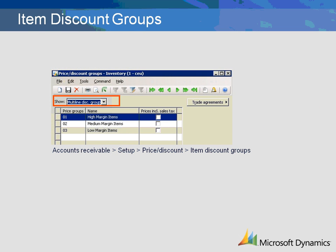The item discount group form can be accessed either through Accounts Receivable or Inventory. The same form is accessed, so if you create groups in Accounts Receivable, they will show in Inventory and vice versa. Here we will create item groups identified in our pricing matrix. First, select the type of group we are creating. The type corresponds to the trade agreement type. In this case, select multi-line discount group, then create an identifier for each group. The price group is an alphanumeric field.